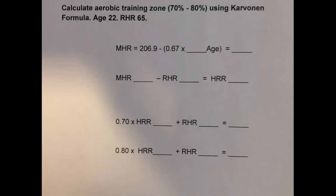Calculate the aerobic training zone using the Karvonen formula for a client age 22 with a resting heart rate of 65 beats per minute.